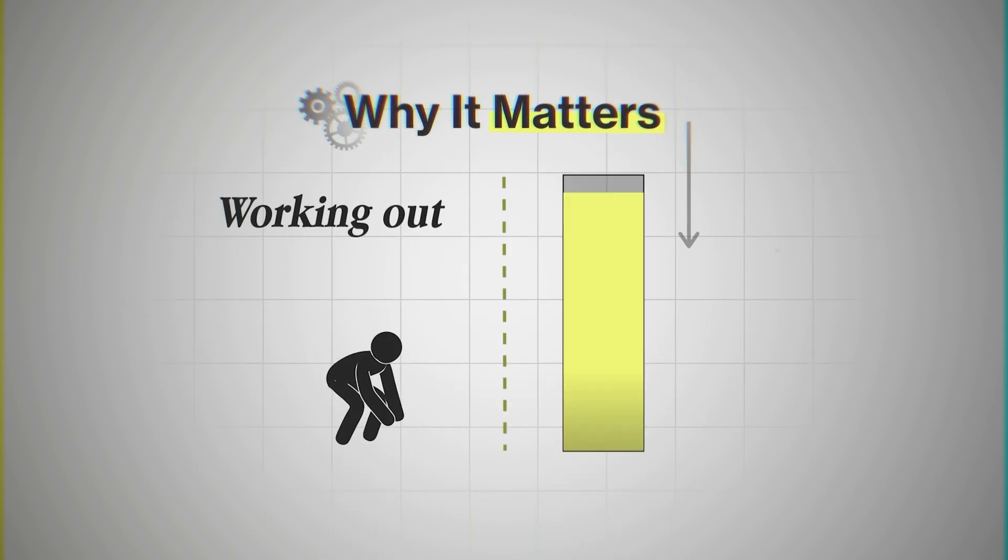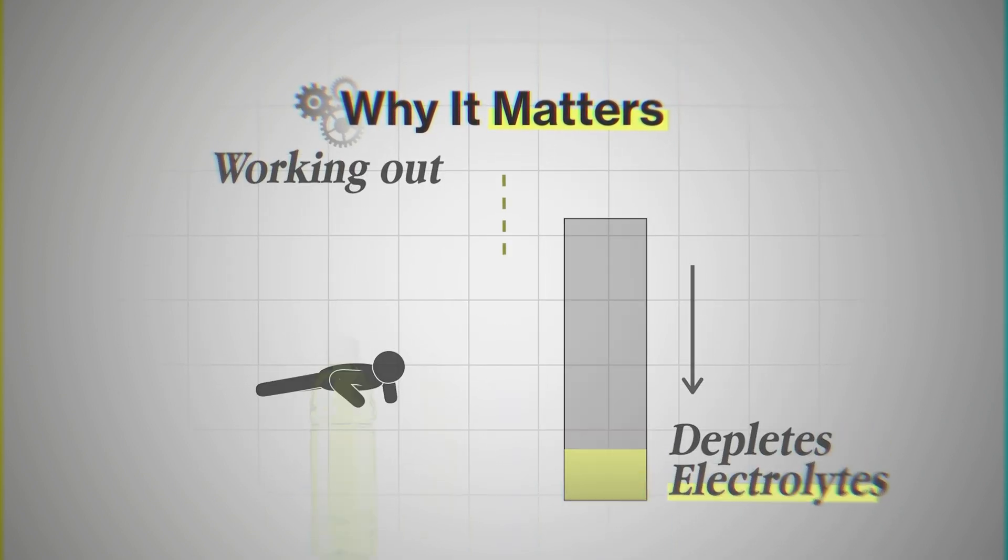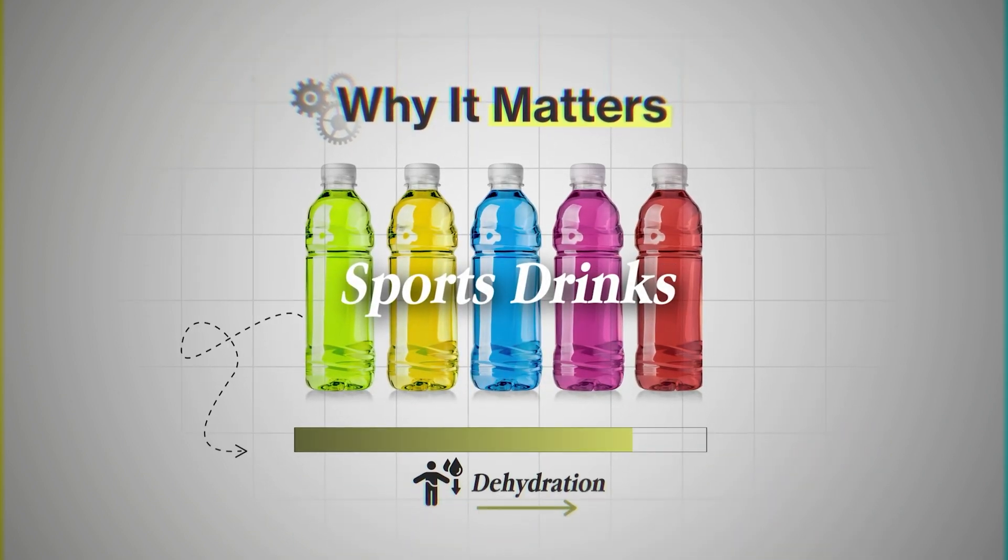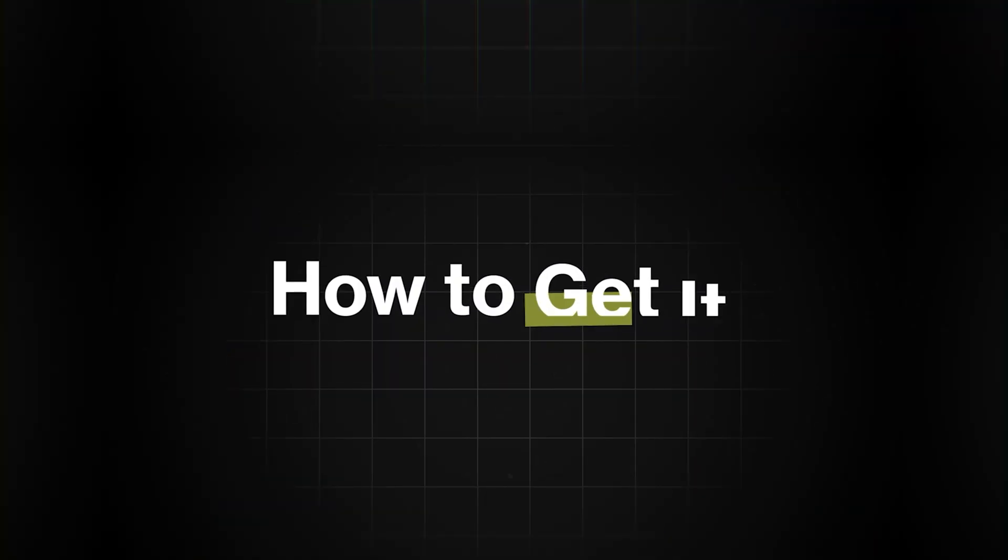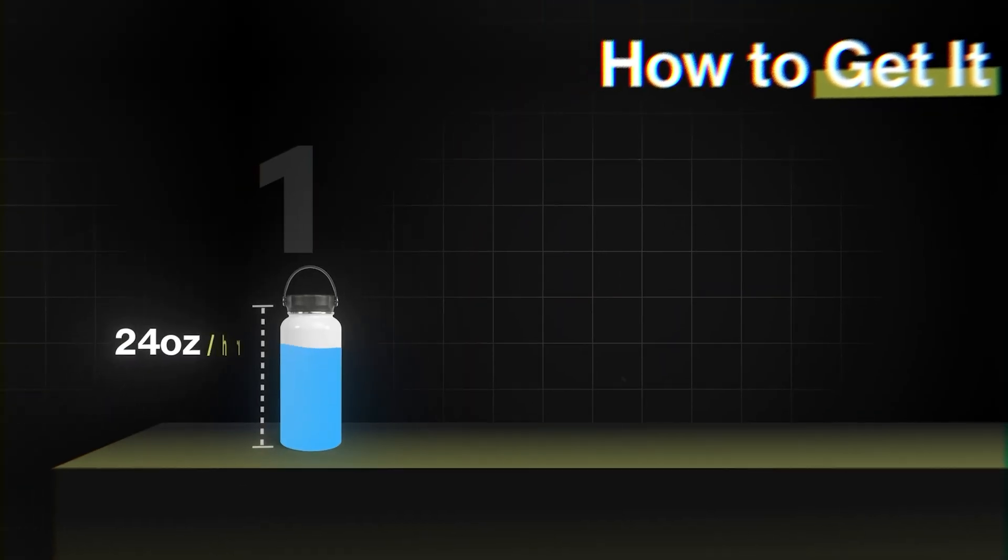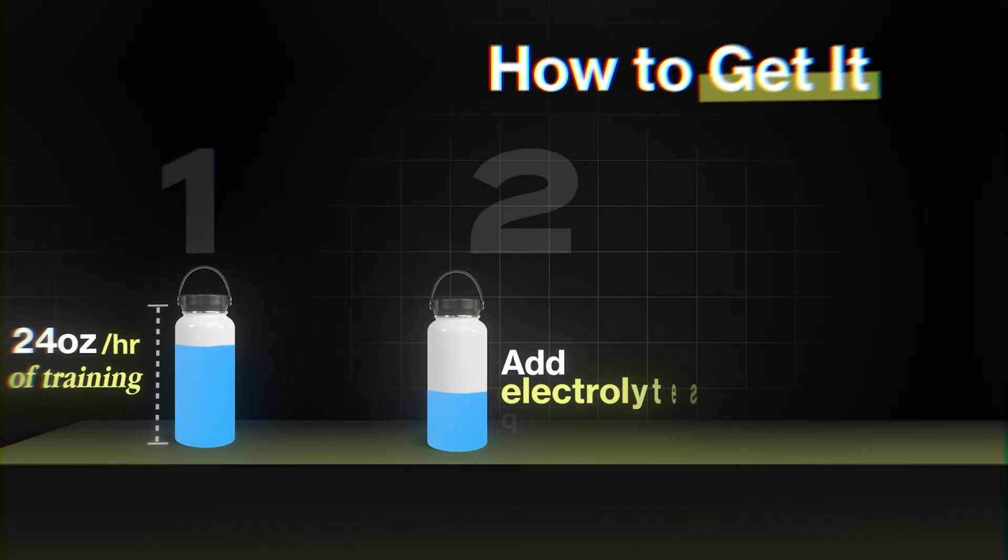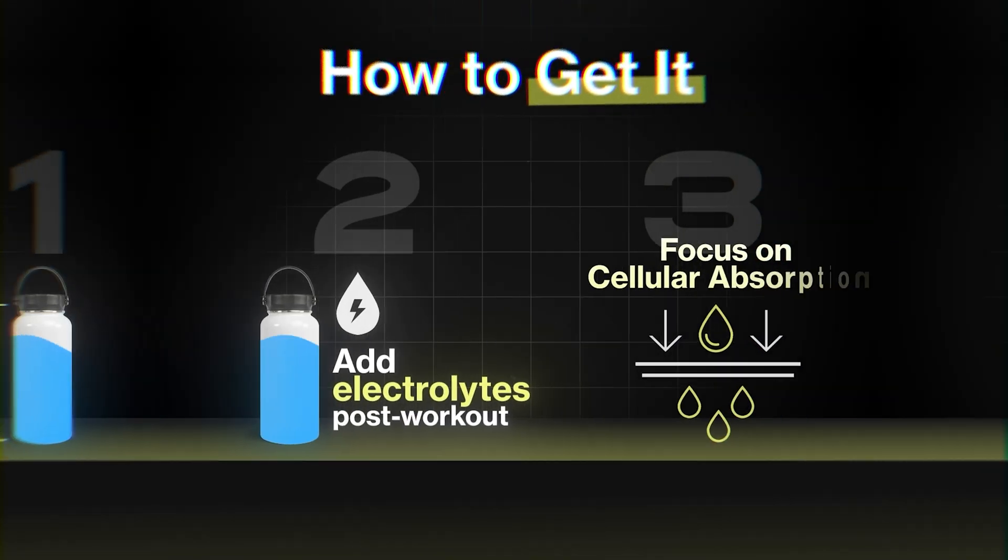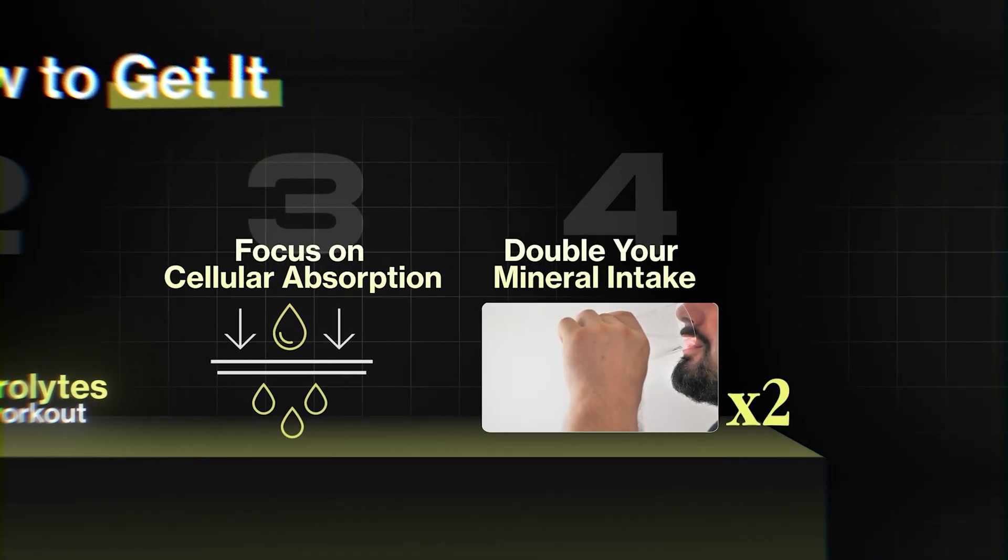The third one is the exercise protocol. Why does it matter? Because working out depletes electrolytes fast, and most sports drinks just make dehydration worse. So how do you get it? 24 ounces of water per hour of training. Add electrolytes post-workout. Focus on cellular absorption and double your mineral intake.